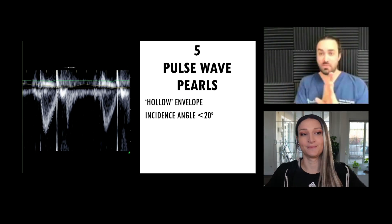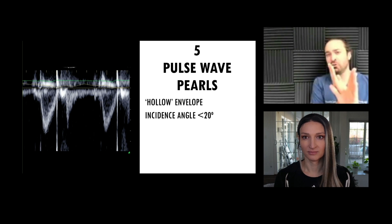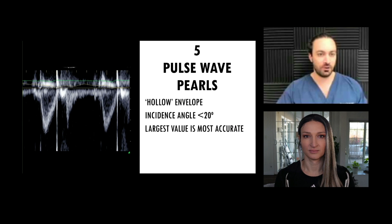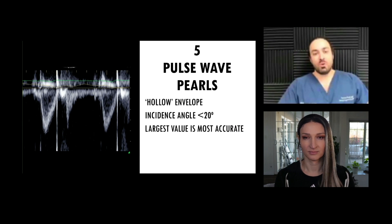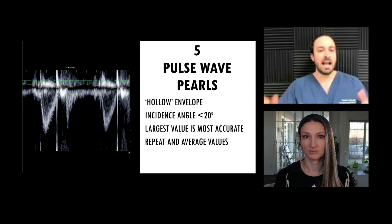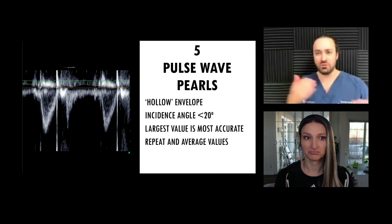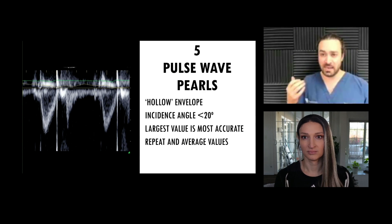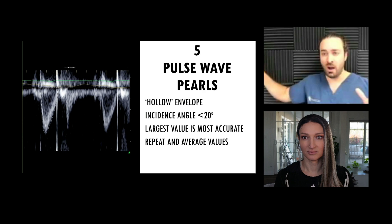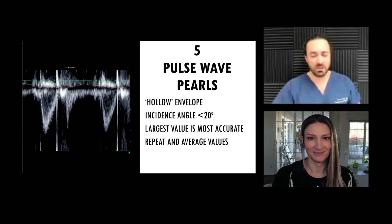And if you get off, your signal will be lower — you're underestimated. As you approach the correct angle, you're going to get closer to the true value. Larger values are most accurate — that's going to be the case for your VTI. I like to repeat and average our values. We were talking about using the auto function; I was using it this morning in a hands-on session and it got me 14 VTIs that all looked traced pretty well. That's going to be more accurate. I'm starting to become a fan.